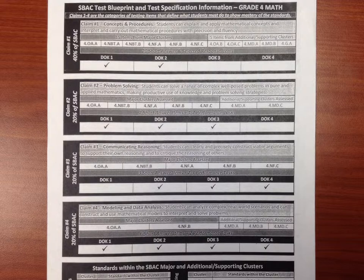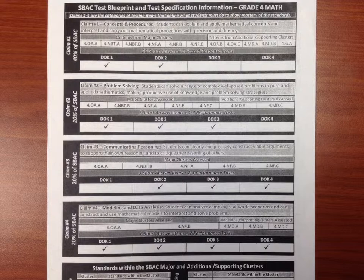What about NF — numbers and fractions A, B, and C? Numbers and fractions B, A, B, and C appear again; numbers and fractions B is featured in every category on the major cluster side. So fractions — how much am I focusing on fractions during the year? It better be tons. In fact, I have fractions leading all the way up right to the test so that it's the freshest standard students have been focusing on.